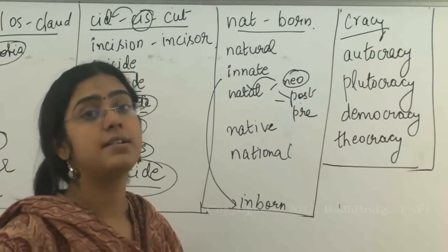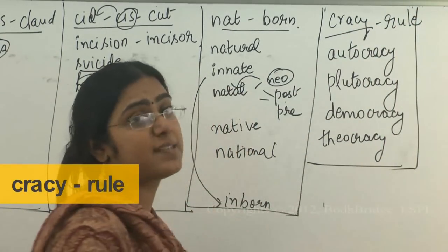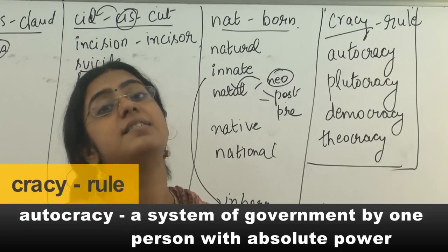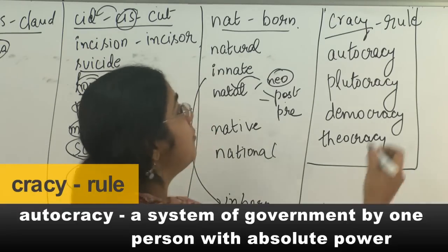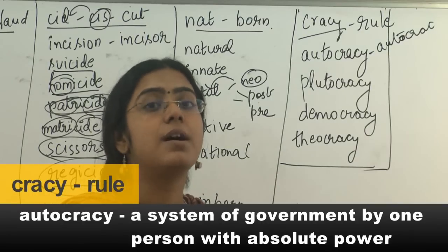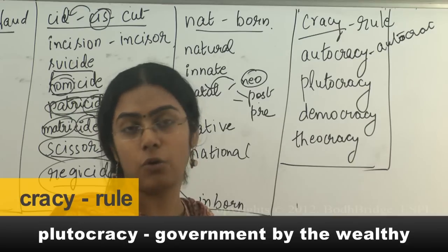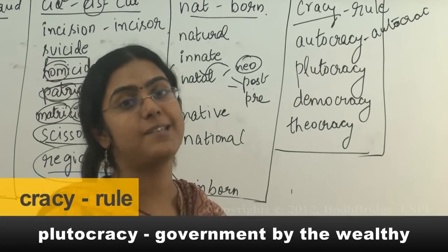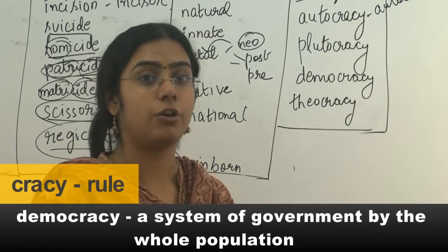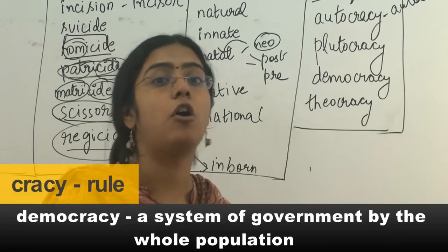The next root word is CRACY, which means rule. Autocracy: 'auto' is the root word for self, so autocracy means self-rule. From that you get autocrat — a ruler who governs the entire country. Plutocracy is a government or rule by a group of rich people. Democracy: the rule of the people, by the people, for the people — 'demo' is the root word for people or population.